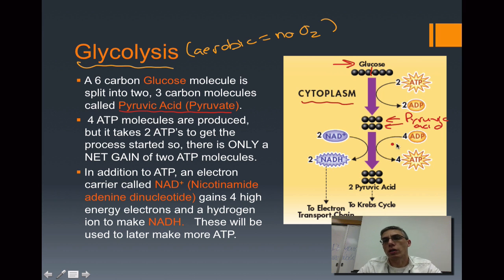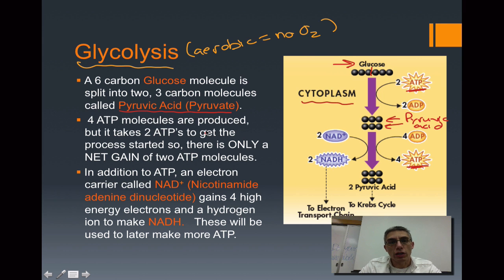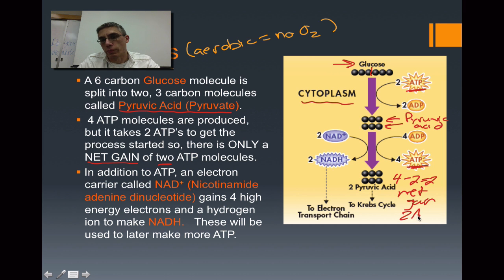As this process continues, we're going to end up producing four ATP molecules at the very end. However, glycolysis really only produces two ATP molecules net. The reason for that is that in order to split the glucose molecule into two, we needed two molecules of ATP at the beginning. So if we produce four molecules of ATP but used two at the start, we really only have a net gain of two ATPs.